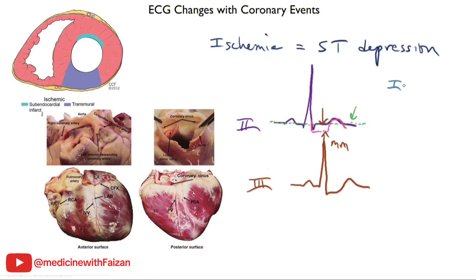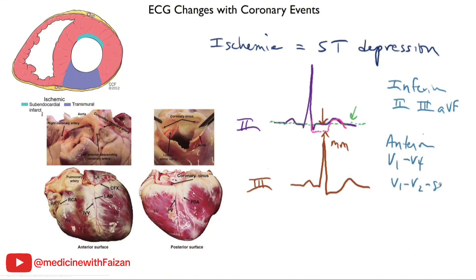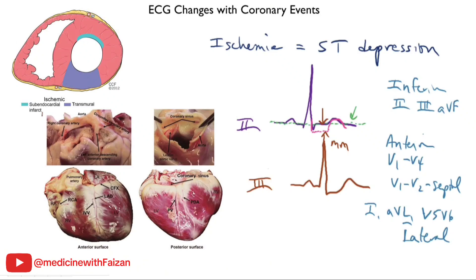Let's review which leads point to which areas of the heart. The inferior leads are 2, 3, and AVF. The anterior leads are V1 through V4, with V1 and V2 mostly septal and V3 and V4 mainly anterior wall. Lead 1, AVL, V5, and V6 point more towards the lateral wall. As for the posterior wall, we don't have leads over it, so we generally look for opposite changes in the anterior leads — we will talk about this later.